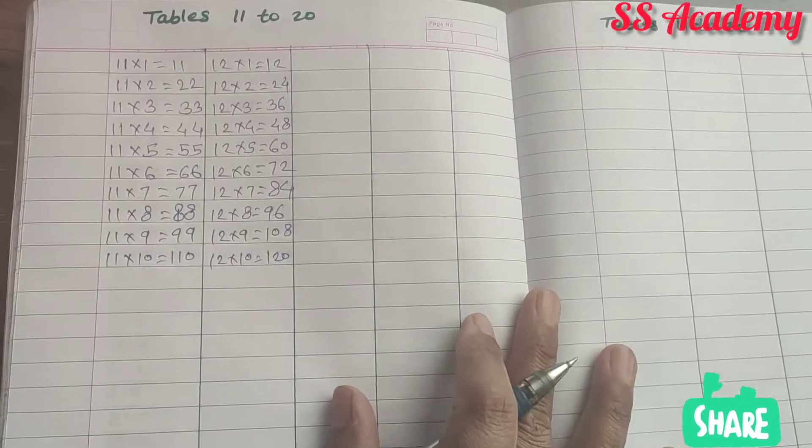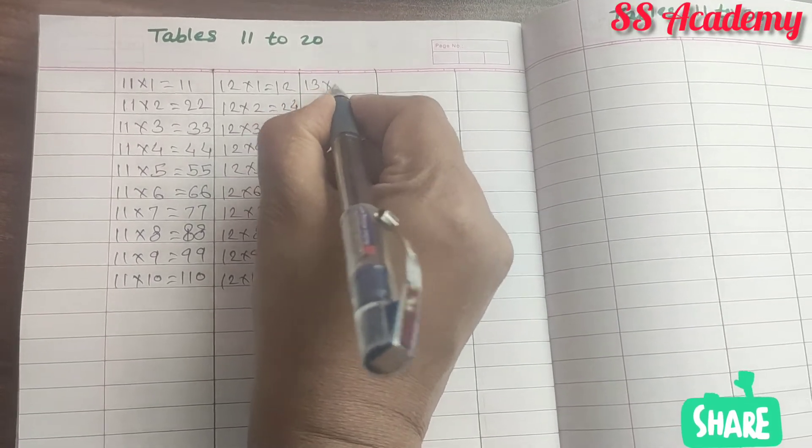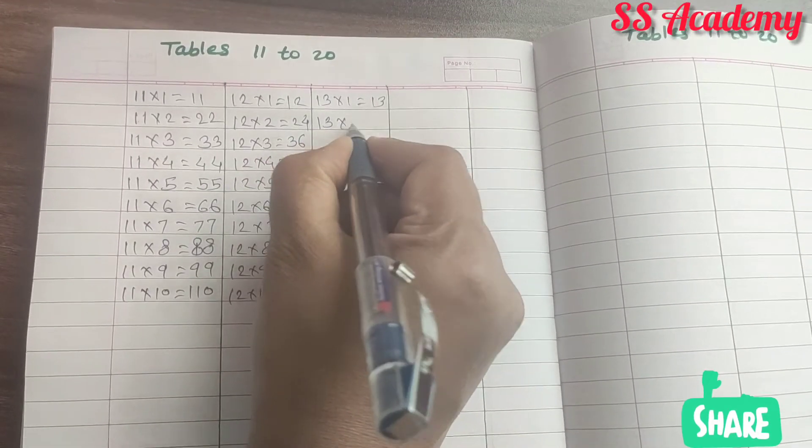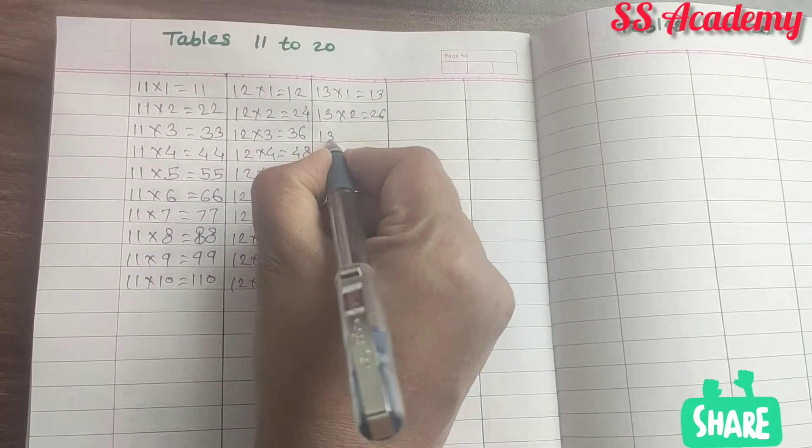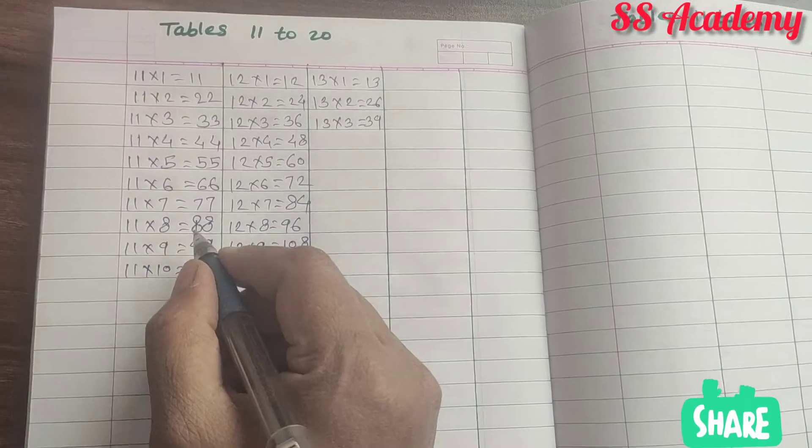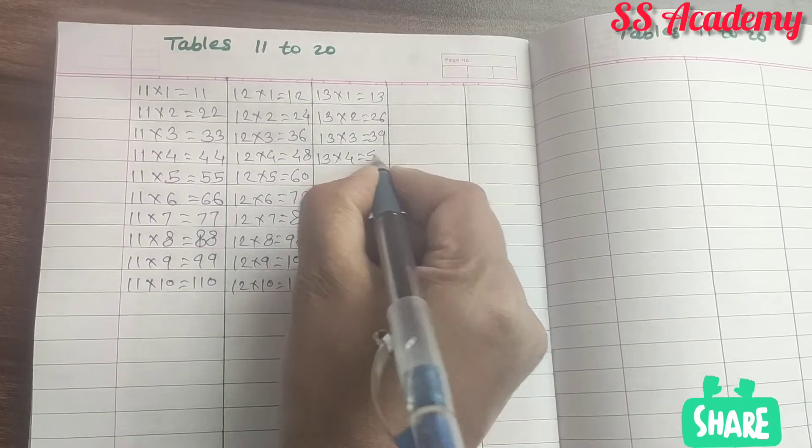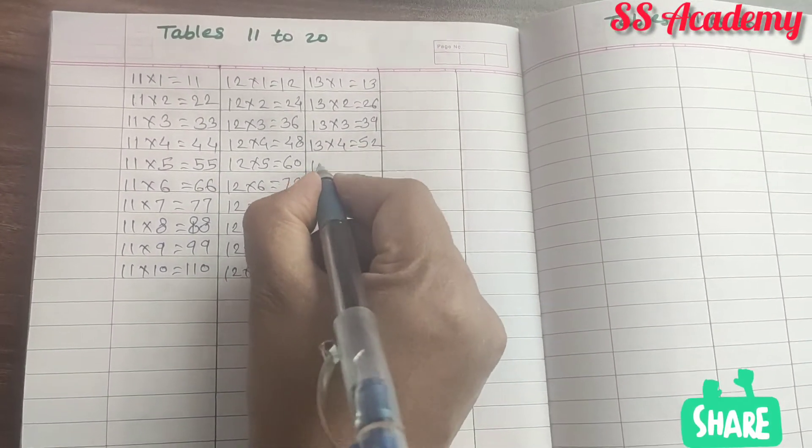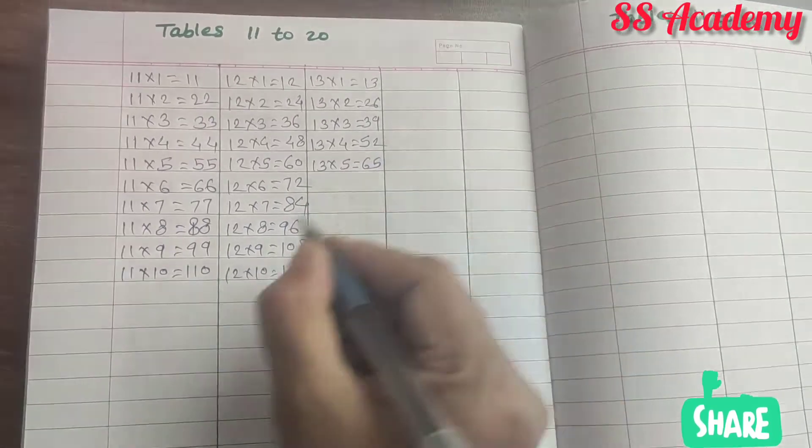Next table, 13. 13 times 1 is 13. 13 times 2 is 26. 13 times 3 is 39. 13 times 4 is 52. 13 times 5 is 65.